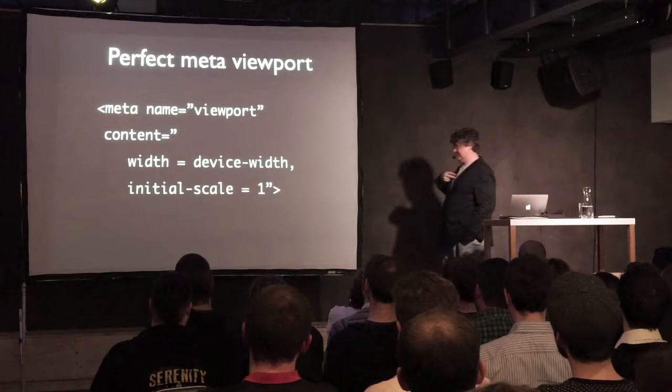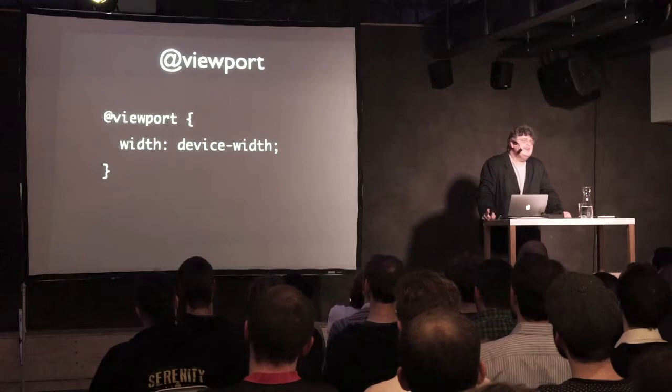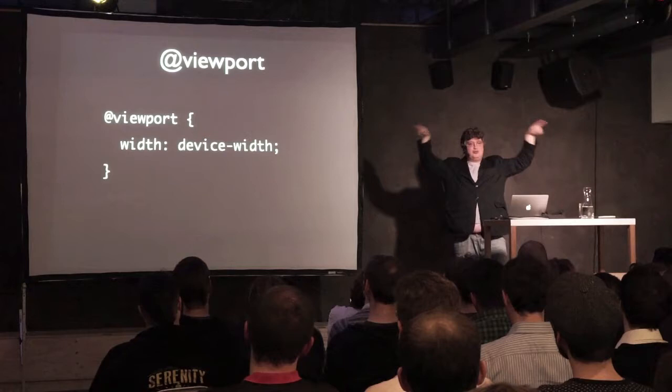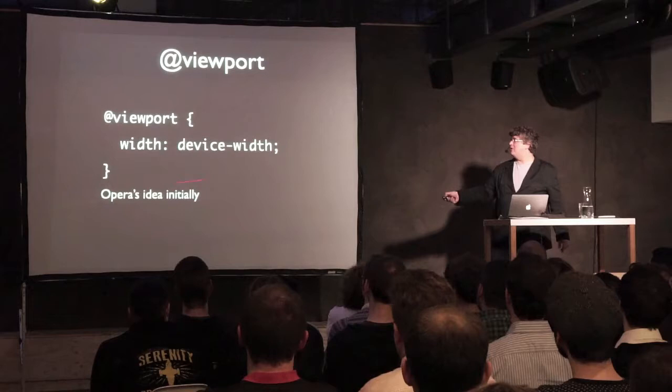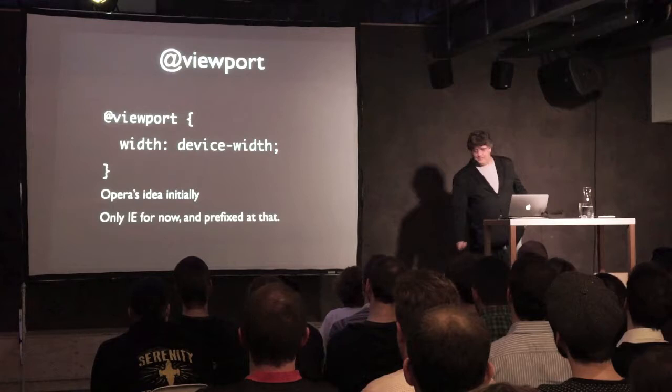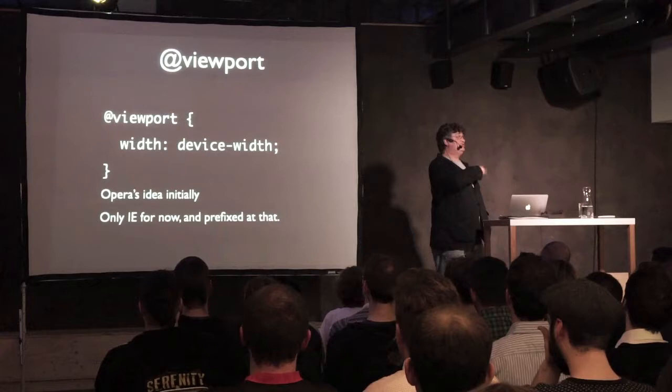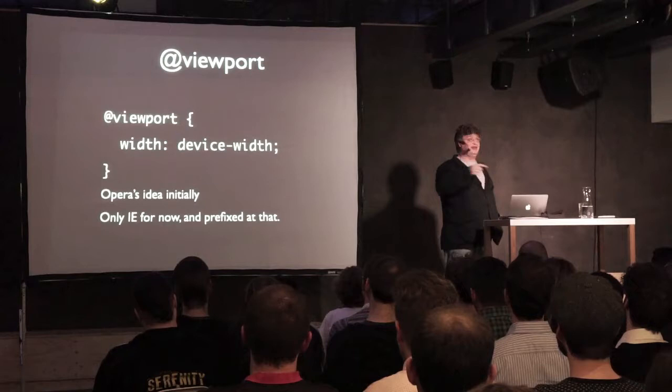There's something weird about the meta-viewport though. The meta-viewport is an HTML tag — it has square brackets — but it's actually telling you something fundamental about the CSS. It has nothing to do with HTML. Which is why Opera proposed a proper CSS implementation of the viewport. Meanwhile, only IE supports it, because Opera used to support it in its old Presto rendering engine, but when they moved to Blink about a year and a half ago, they lost this syntax.